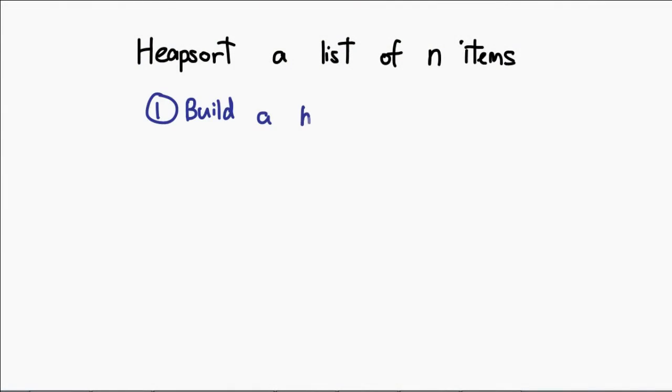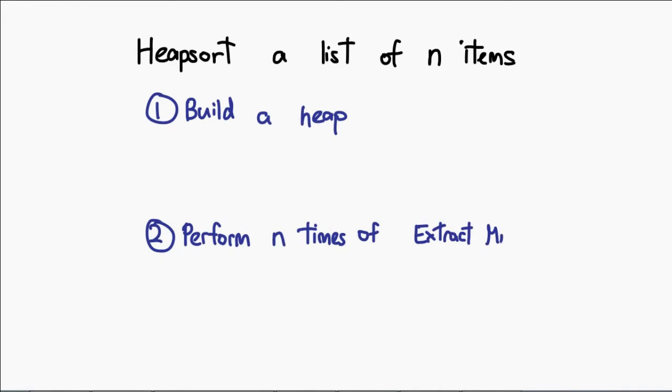So let us now take a look at whether heapsort is quick or slow. As always, in order to do that, we're going to have to take a look at everything that happens during the heapsort process, decide on how long they take, and then put it all together to get a final time complexity. So let's say now we want to sort a list of n items — the first thing we're going to need to do is to build a heap. Once we're done with that, we're going to do extract min n times. In a nutshell, that's it.